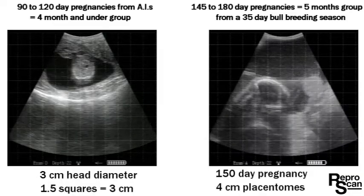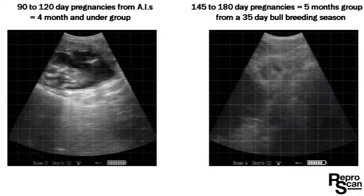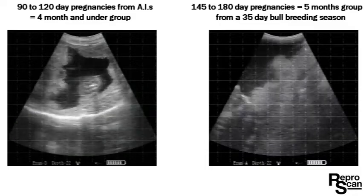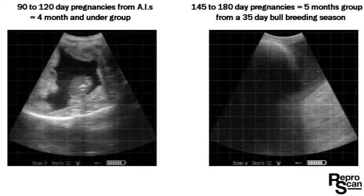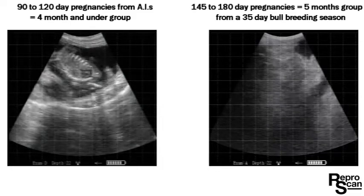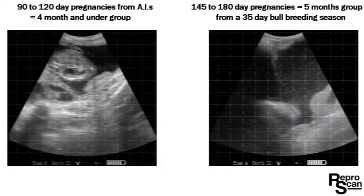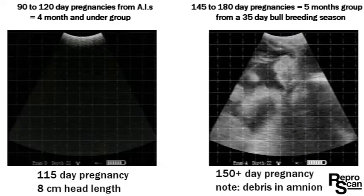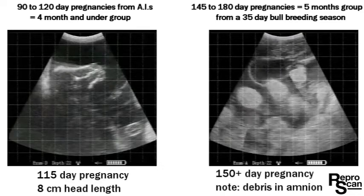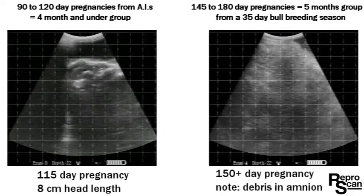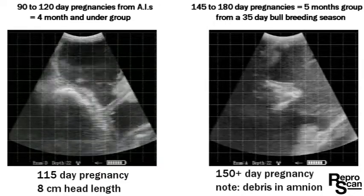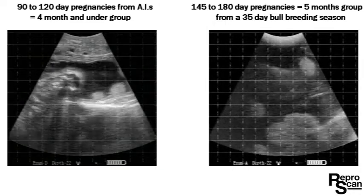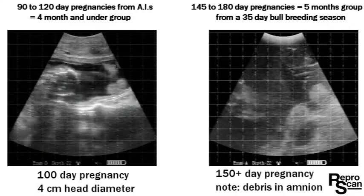On the left we have 90 to 120 day pregnancies resulting from AI projects, so we're going to call this the four month and under group. On the right screen we have 145 to 180 day pregnancies, which we'll call the five month group, and these result from a 35 day bull breeding season in a group of Angus cross heifers.